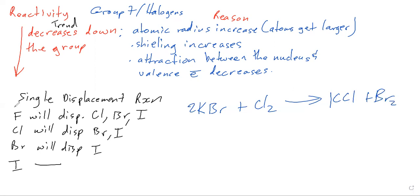So I mentioned it here. So basically, you don't have to memorize this. If you know that the reactivity decreases down the group, chlorine is above bromine. So whatever is above will displace what is below. So chlorine can displace bromine.